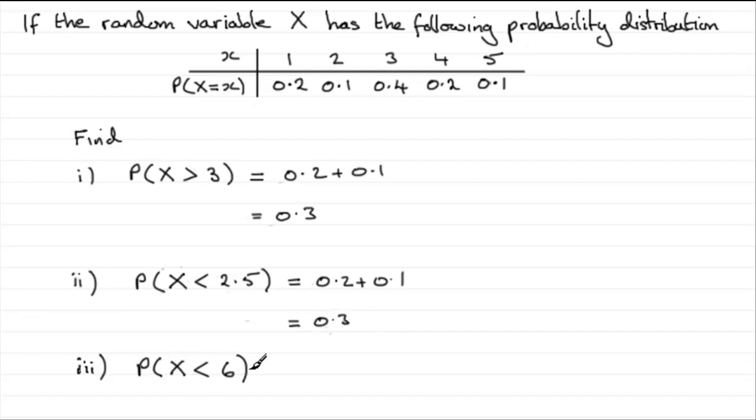And this one, probability X is less than 6. Well, all of these values are less than 6. So if you total them up, you'll find that you get 1.